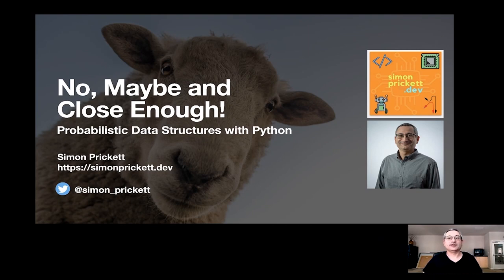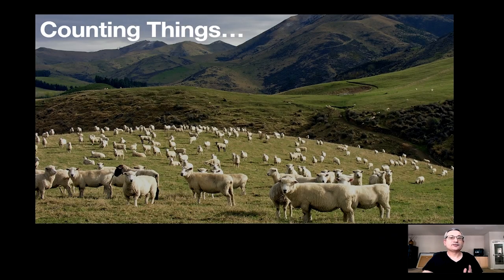Hello, my name is Simon Prickett and this is No, Maybe, and Close Enough where we're going to look at some probabilistic data structures with Python. The problem we're going to look at today is related to counting things. Counting things seems quite easy on the face of it. We just maintain a count of the things that we want to count and every time we see a new and different thing we add one to that count. How hard can this be?